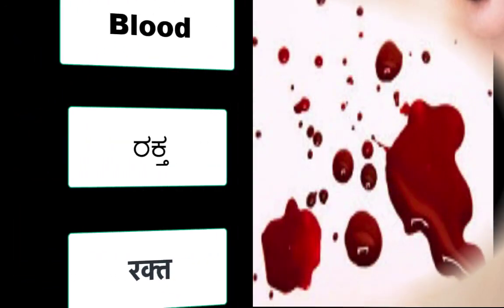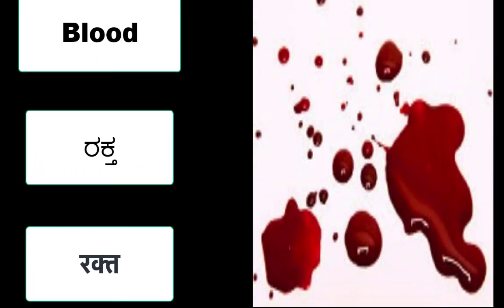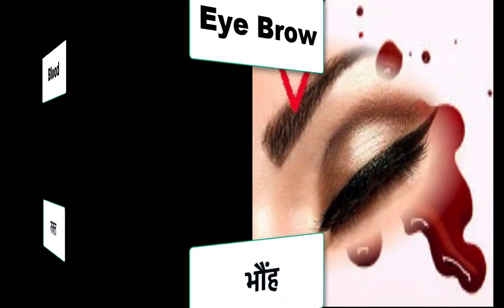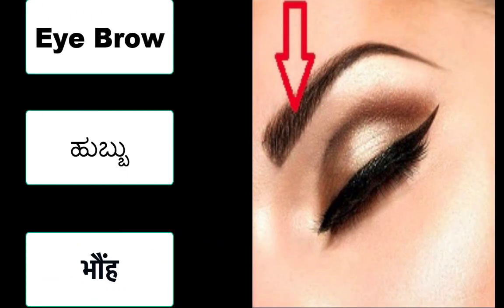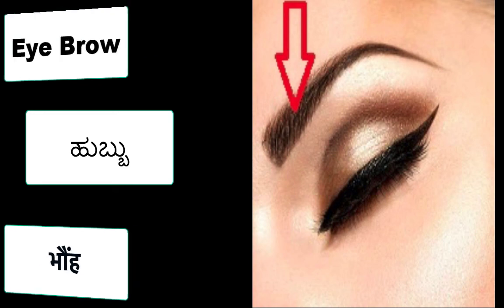In English, this is called as blood. In Kannada, it is ratta. And in Hindi, it is also called ratta. In English, this is called as eyebrow. In Kannada, it is uguru. And in Hindi, it is called bhoo ya boi. Thank you.